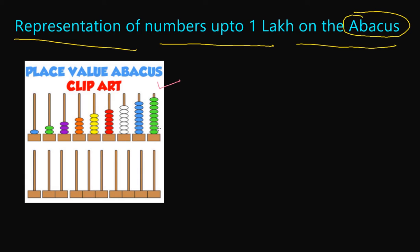Suppose on this stand we have one, two, three, four, five, six, seven, eight, nine — there are nine beads on the stand. So you can say that there are nine beads on the stand. Similarly you count this.